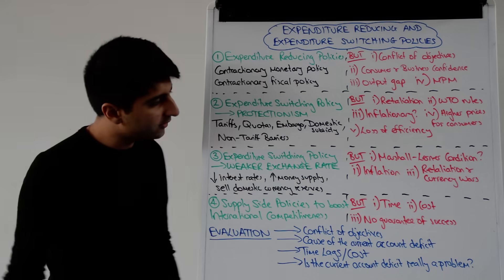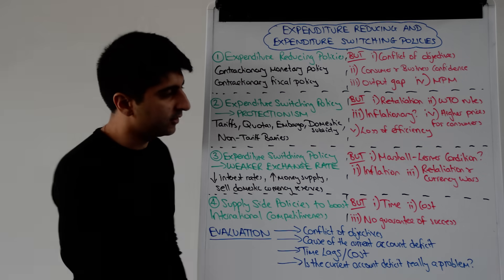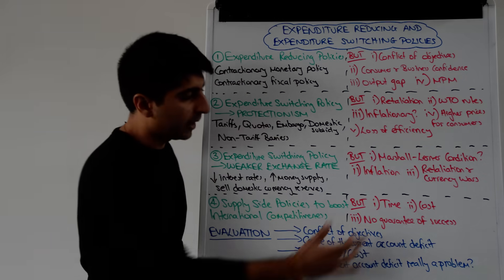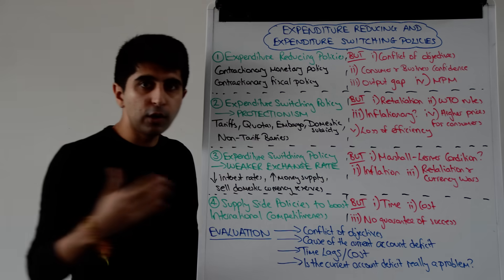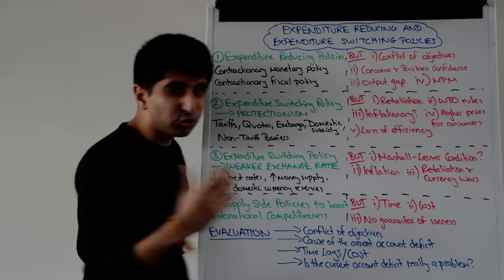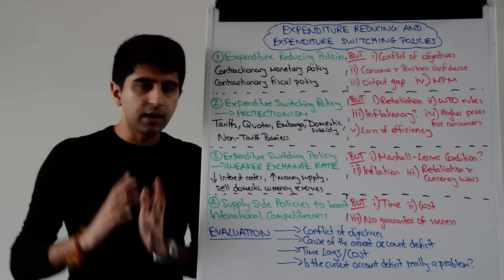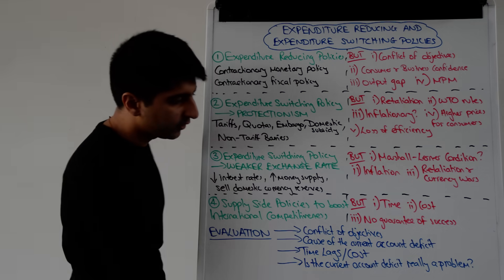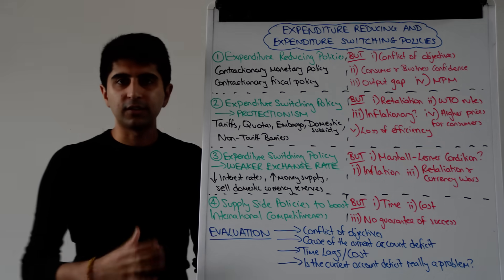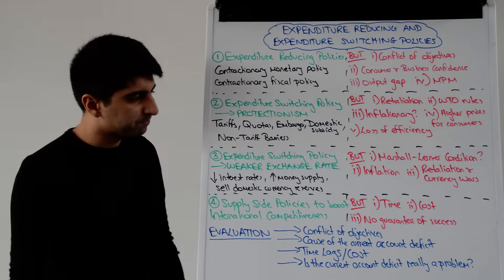By improving international competitiveness, you can provide a boost to export performance and export revenues, helping to close the current account deficit. Also by making domestic goods and services more competitive, individuals can switch away from buying imports and purchase domestic goods instead, reducing import expenditure. However, the problem with supply-side policies is they are very long-run policies — they take a long time to work, they are extremely costly and carry a very large opportunity cost, and there is no guarantee of success.